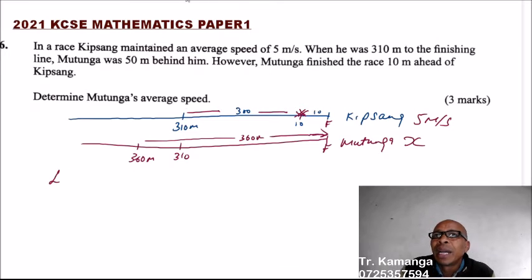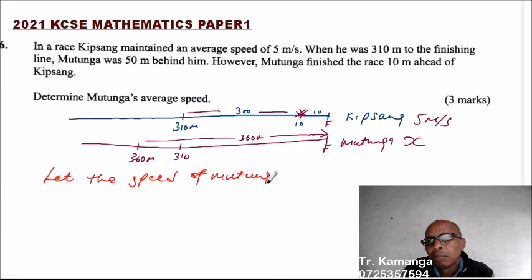So we say, you work it like this. Let the speed of Mutunga be X. So we say, the time taken by Mutunga to cover 360, time is equals to distance over speed.